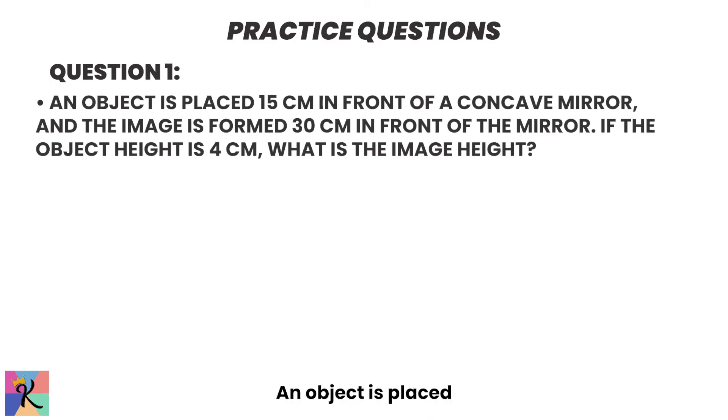Question 1. An object is placed 15 centimeters in front of a concave mirror, and the image is formed 30 centimeters in front of the mirror. If the object height is 4 centimeters, what is the image height? A, 2 centimeters. B, 4 centimeters. C, 6 centimeters. Or D, 8 centimeters. Pause for a moment.